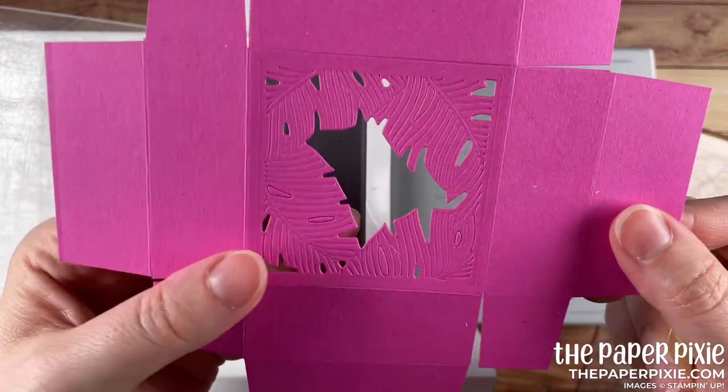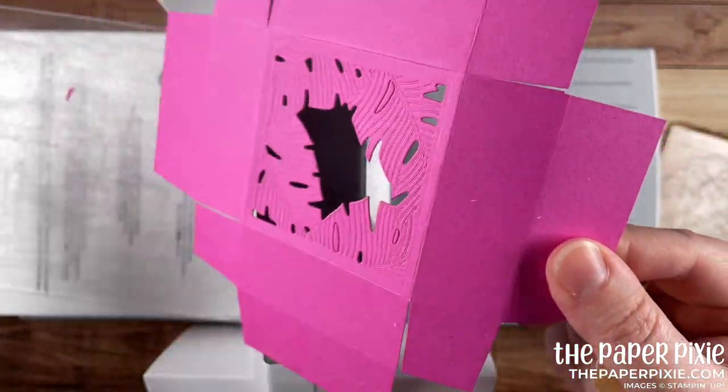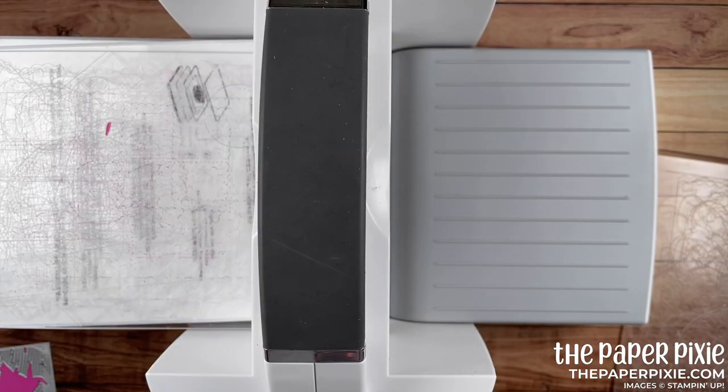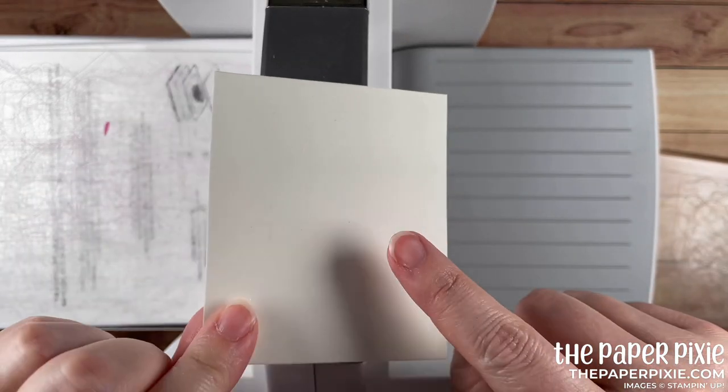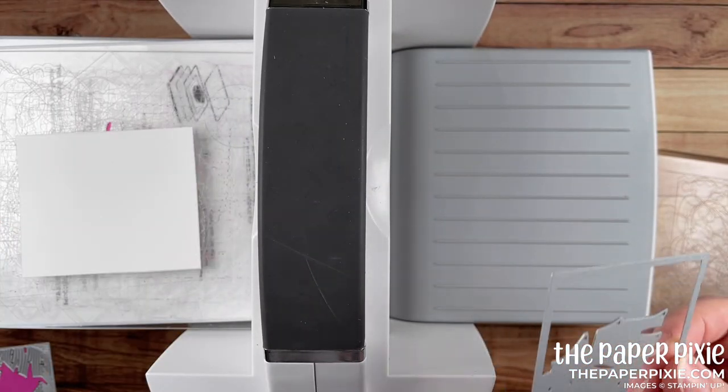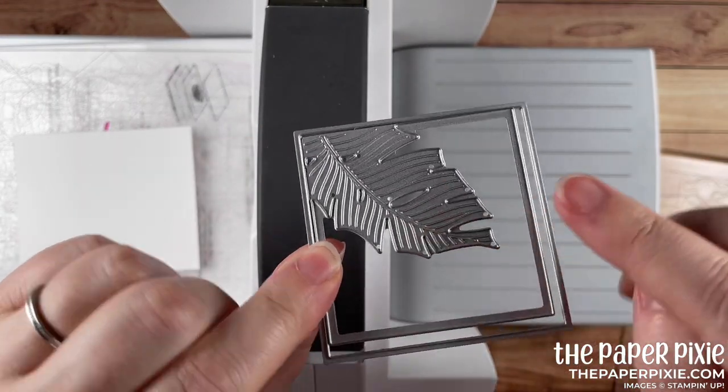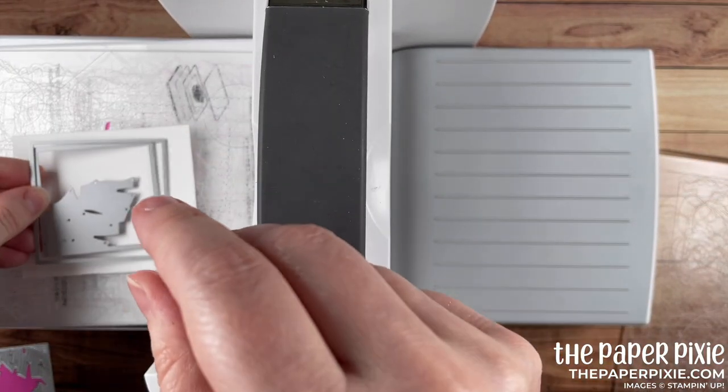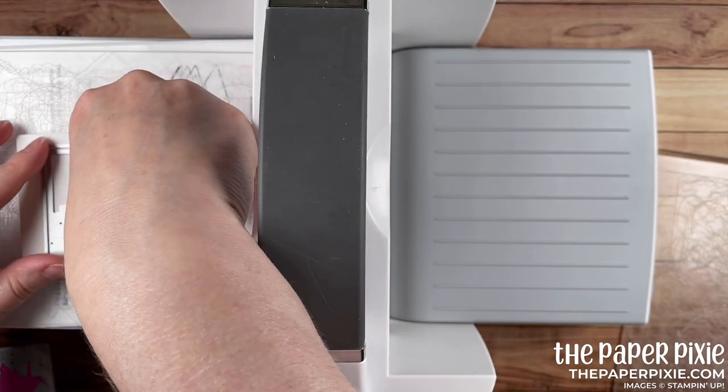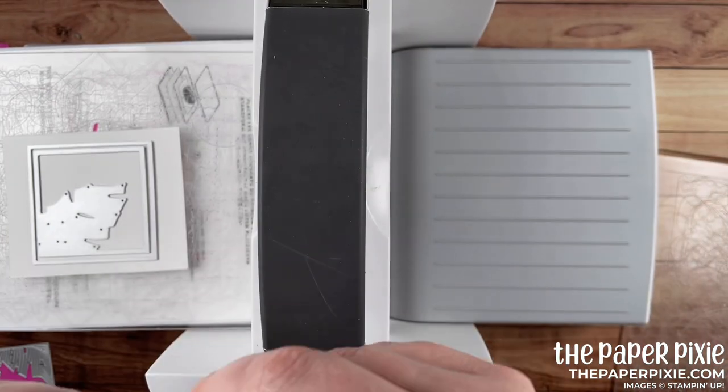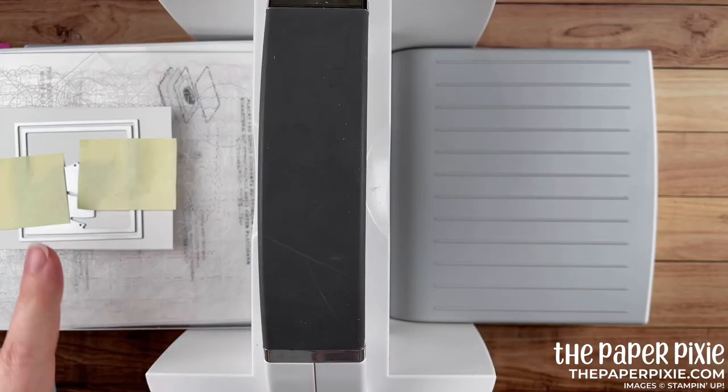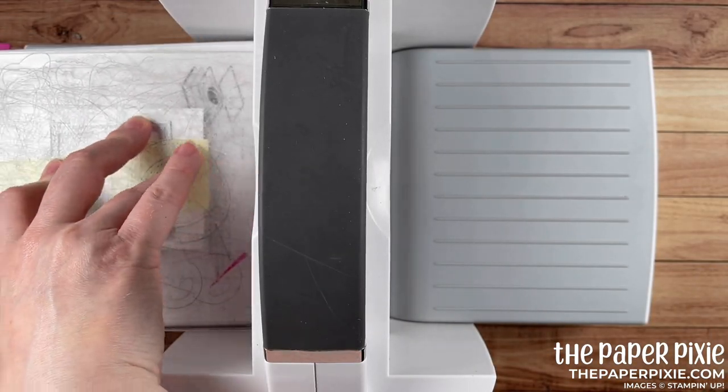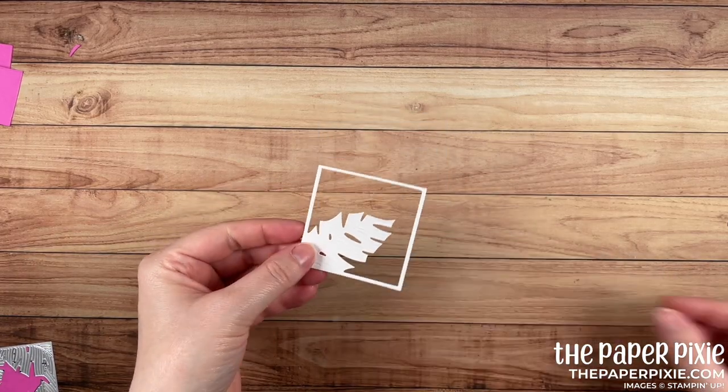Now how amazing is that? I've got a couple pieces that I need to pop out but look at that awesome window. Now while we have the machine out I've got a piece of basic white that I've added our adhesive sheets to the back and I'm going to cut a different window. I'm going to use this die plus the square die around it and we're going to cut this basic white piece that's going to layer on top of our box. Again using that mini post-it note to hold everything in place. I added two post-it notes to keep that in place and we'll run that through the machine.